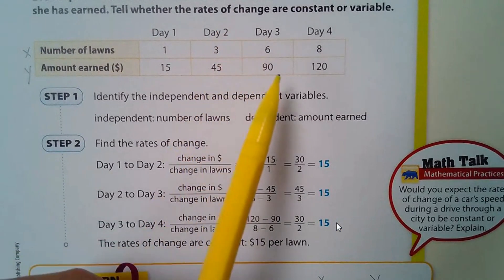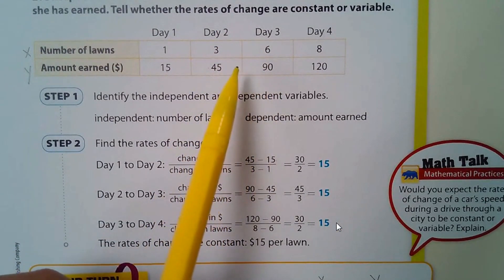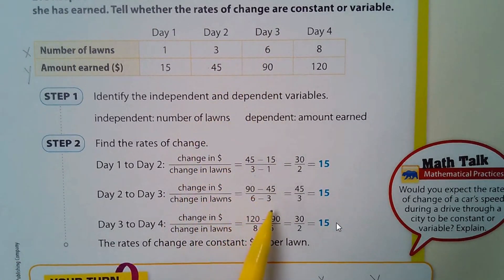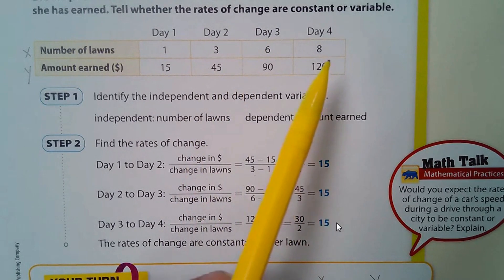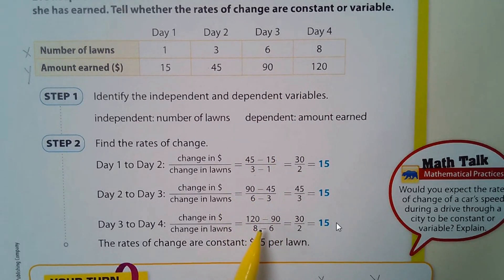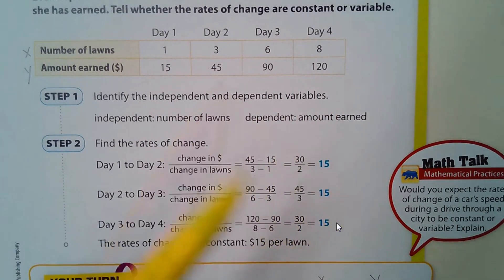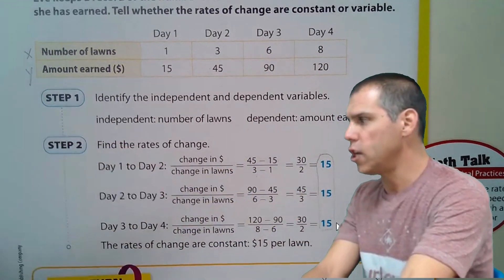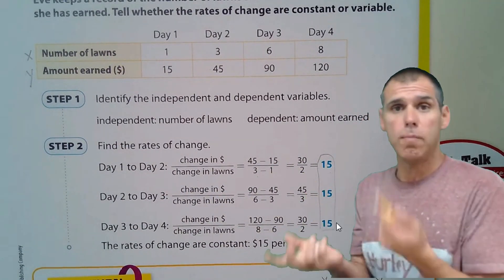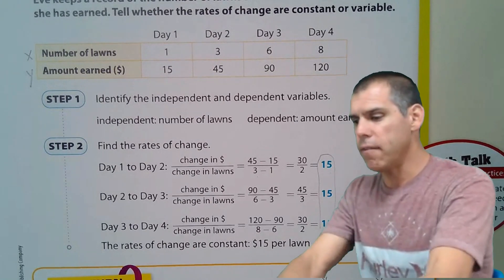From day 2 to 3, the change in y is 90 minus 45, and the change in x is 6 minus 3, so that rate of change is 45 divided by 3, which is still 15. For the next interval: 120 minus 90 over 8 minus 6 — taking the bigger number minus the smaller to get positive values — gives 30 divided by 2, which is still 15. The rate of change is constant at $15 per lawn.